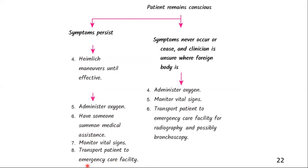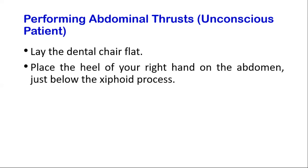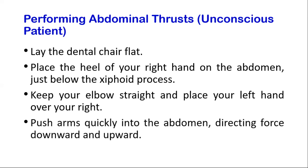Transport the patient to an emergency care facility for further management. Now let's explain how to perform abdominal thrusts on an unconscious patient with an airway obstruction. First, lay the dental chair flat. Next, place the heel of your right hand on the patient's abdomen just below the xyphoid process. Keep your elbow straight and place your left hand over your right for extra force. Finally, push your arms quickly into the abdomen directing the force downwards and upwards.